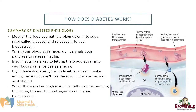How does diabetes work? Most of the food you eat is broken down into sugar, also called glucose, and is released into your bloodstream. When your blood sugar goes up, it signals your pancreas to release insulin. Insulin acts like a key to letting the blood sugar into your body's cells for energy use. If you have diabetes, your body either doesn't make enough insulin or can't use the insulin it makes as well as it should. When there isn't enough insulin or cells stop responding to insulin, too much blood sugar stays in your bloodstream, creating a great diversity of health issues.